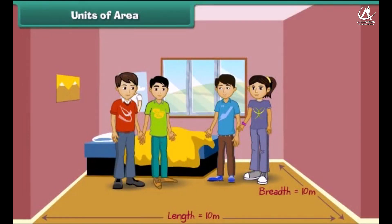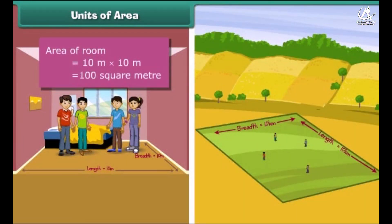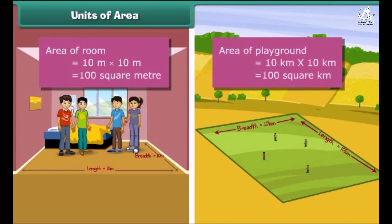How many children can stand in a square room of side 10 meters? And how many children can stand in a square playground of side 10 kilometers? It is clear that more children can be accommodated comfortably in the playground. The area of the room is equal to 100 square meters, while the area of the playground is equal to 100 square kilometers. Thus, square kilometer is a bigger unit for measuring area than square meter.